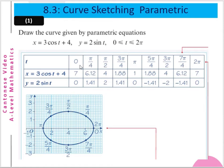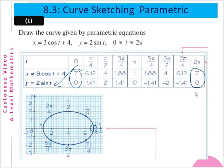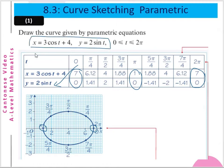Substituting the values of t into the y equation as well, you get y values of 0, 1.41, 2, 1.41, 0, −1.41, −2, −1.41, and 0. So you get pairs of points, for example (7, 0). You plot every point and sketch a curve joining them together. This is an equation of an ellipse — this pair of parametric equations represents an ellipse.